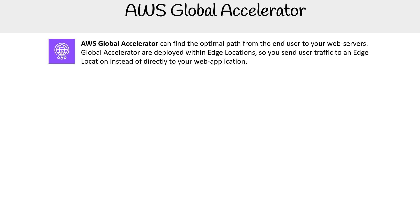Hey, this is Andrew Brown. We are taking a look at AWS Global Accelerator, which you can find optimal paths for from the end user to your web servers. Global accelerators are deployed within edge locations, so you just send traffic to an edge location instead of directly to your web app.